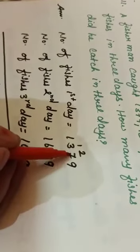First, we will write number of fishes on first day, number of fishes on first day is 1379. Number of fishes second day is equal to 1629. Number of fishes on third day is 1019. And then we will add it. So, look here.